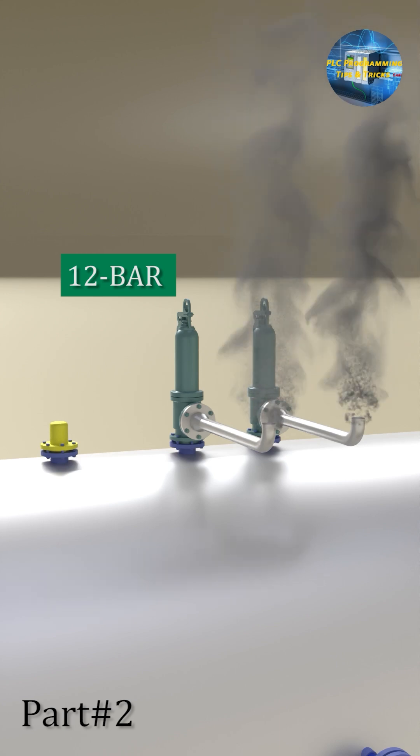These valves are usually installed in pairs to make sure the safety of the boiler. Now let's see the drain valve of the boiler.